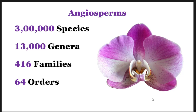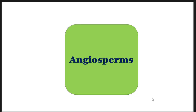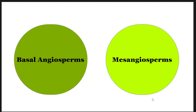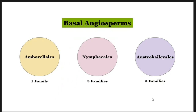When we consider the angiosperms as a whole, the scientific community has categorized all groups of angiosperms into two basic categories: basal angiosperms and mesangiosperms. These are two sister clades. Basal angiosperms have been placed under three orders: Amborellales with one family, Nymphaeales with three families, and Austrobaileyales with three families.